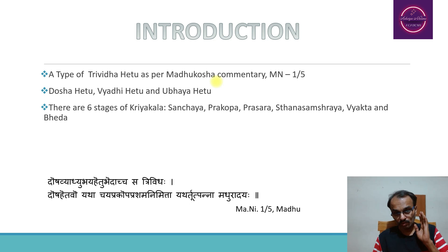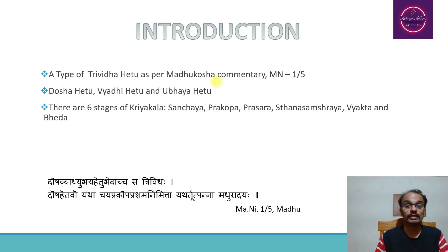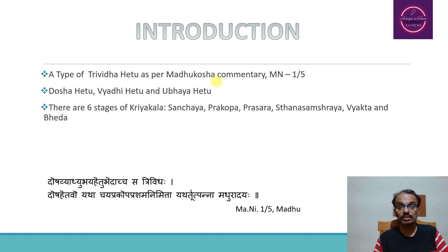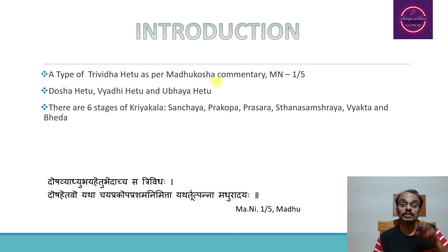The three types of Hetu mentioned by Madhu Kosha are Dosha Hetu, Vyadhi Hetu, and Upaya Hetu. Dosha Hetu, as mentioned in Madhu Kosha commentary — 'Dosha Hetu yatha Chaya Prakopa Prasama Nimittha yatha Ritu Uppanna Madhuradi' — means those factors responsible for the variations observed in different seasons, along with Chaya, Prakopa, and Prasama, that is the Shadrasa beginning with Madhura.